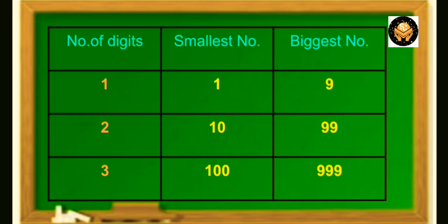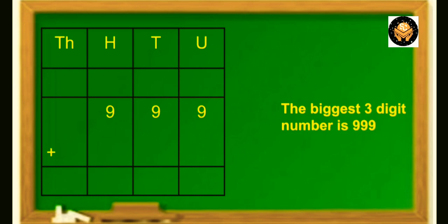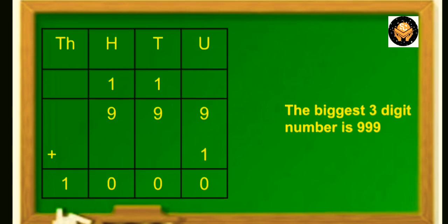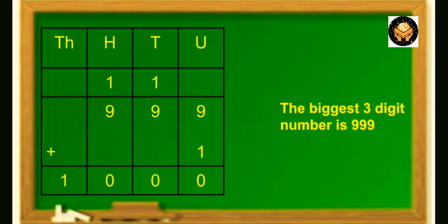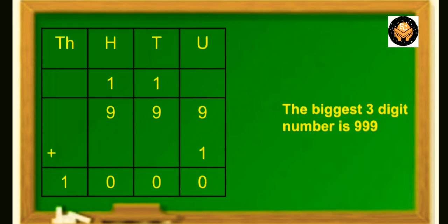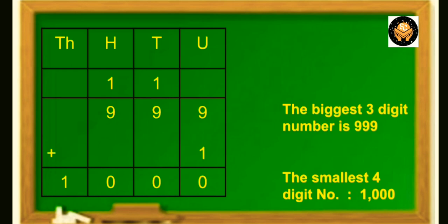Now let's see how we get a 4 digit number. We know that 999 is the biggest 3 digit number. Let's add 1 to it and see what the answer is. The answer is 10 hundred, and 10 hundred is equal to 1000. To write this number we make a new place for it on the left of the 100 place and we call it the TH place, that is the 1000 place. So the next number after 999 is 1000, and 1000 is the smallest 4 digit number.